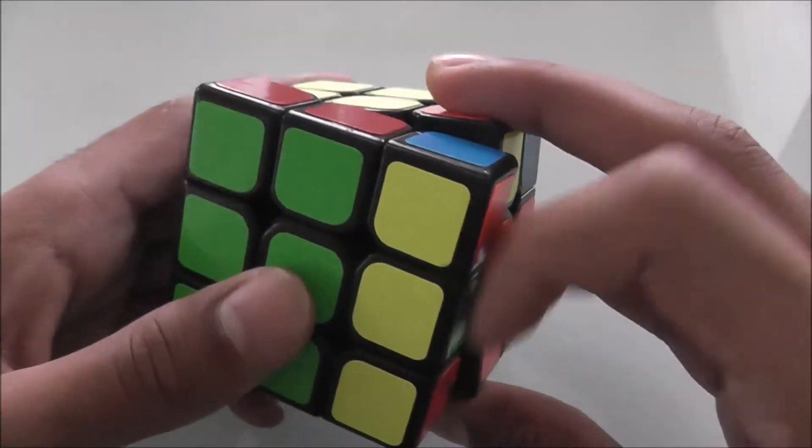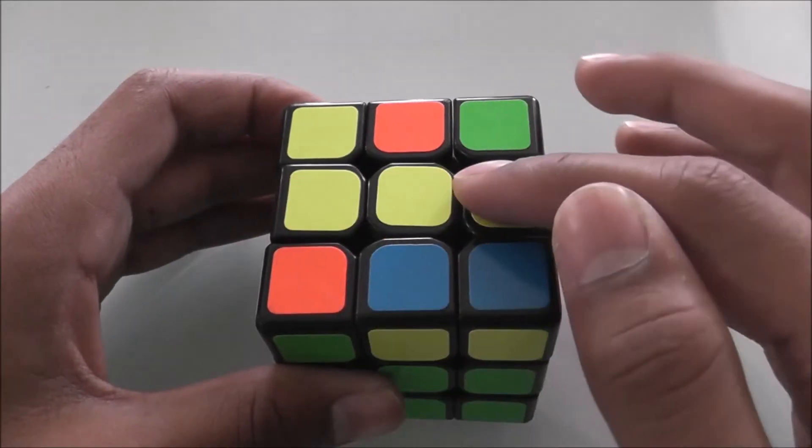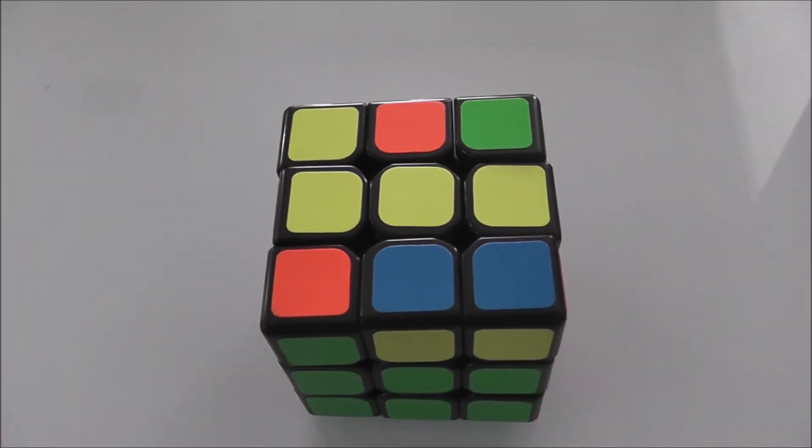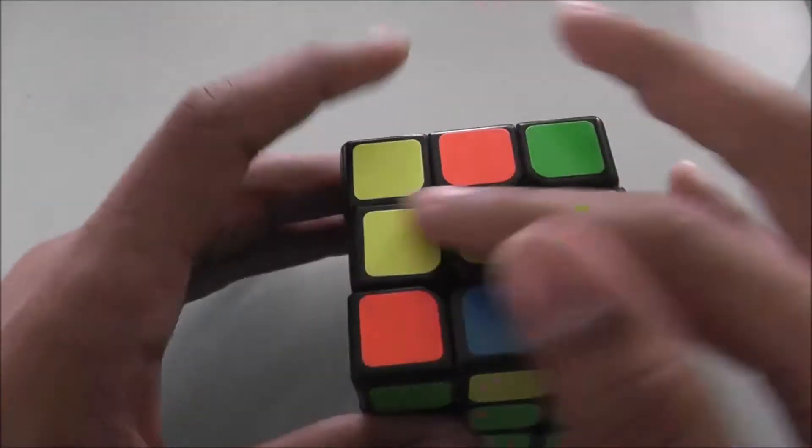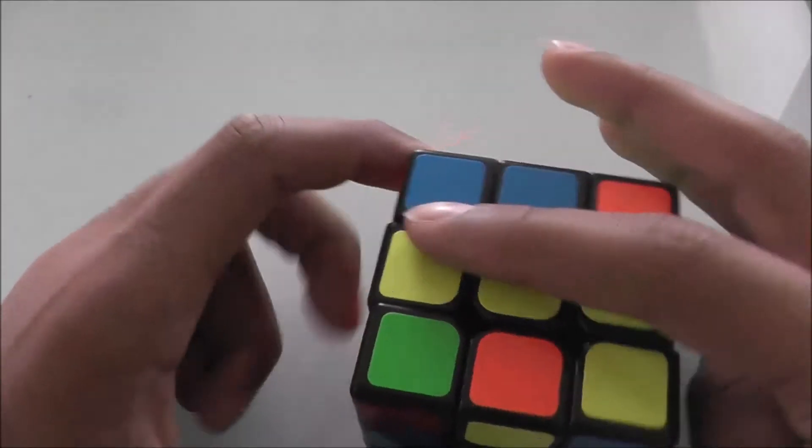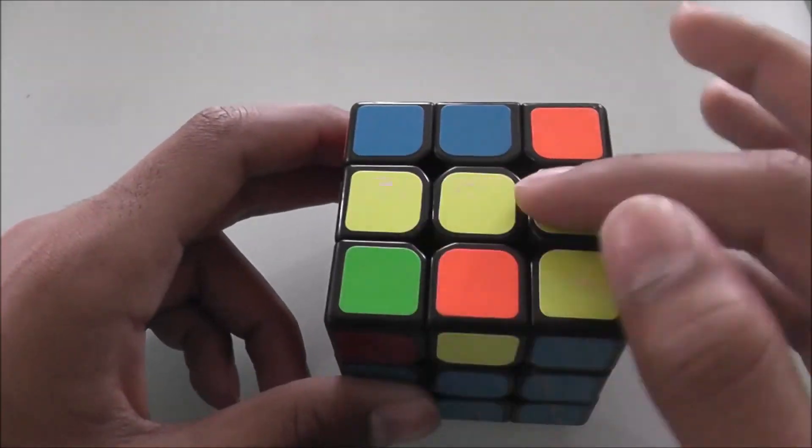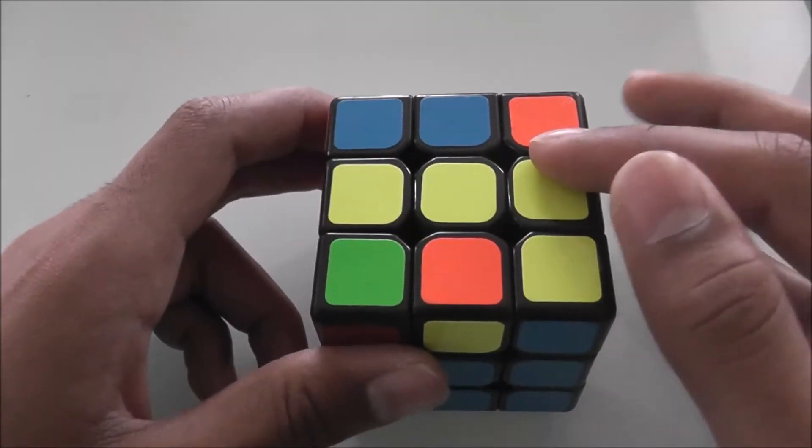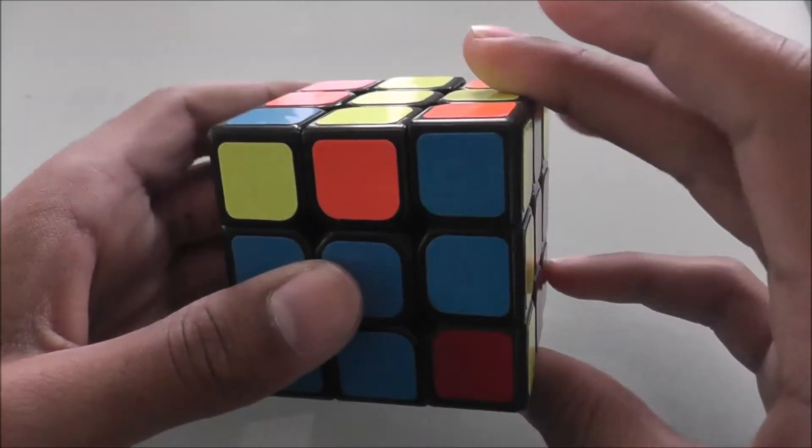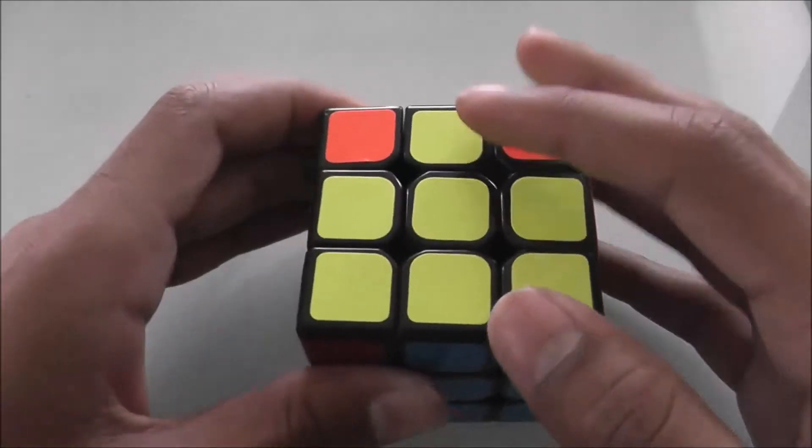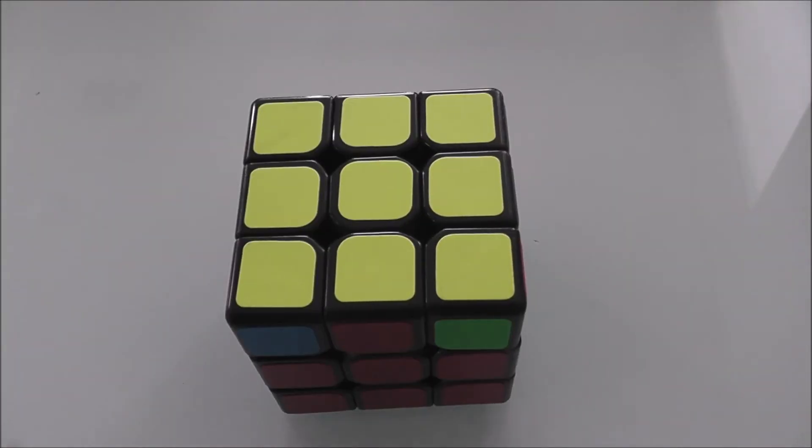And as you can see, that got us the bar. Similarly, if you start off with the bar, or if you just did the algorithm to change from the hook to the bar, whenever you see the bar you're going to hold it horizontally and use the same algorithm: F R U R' U' F'. And you see that solved the cross.